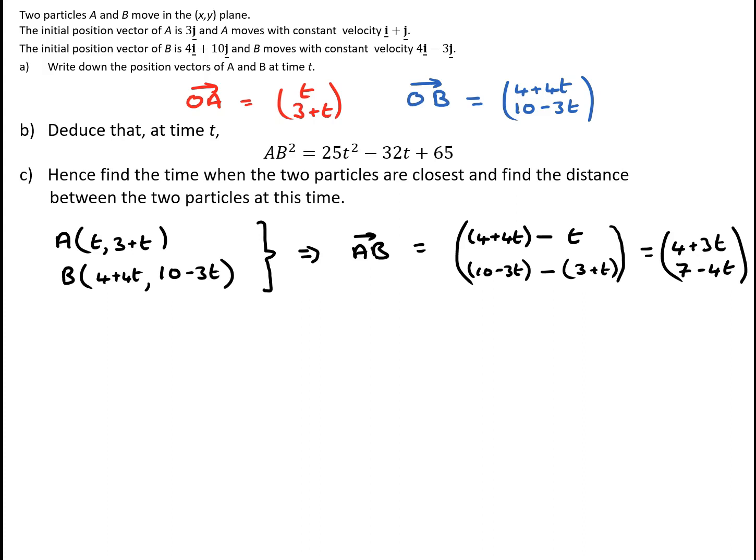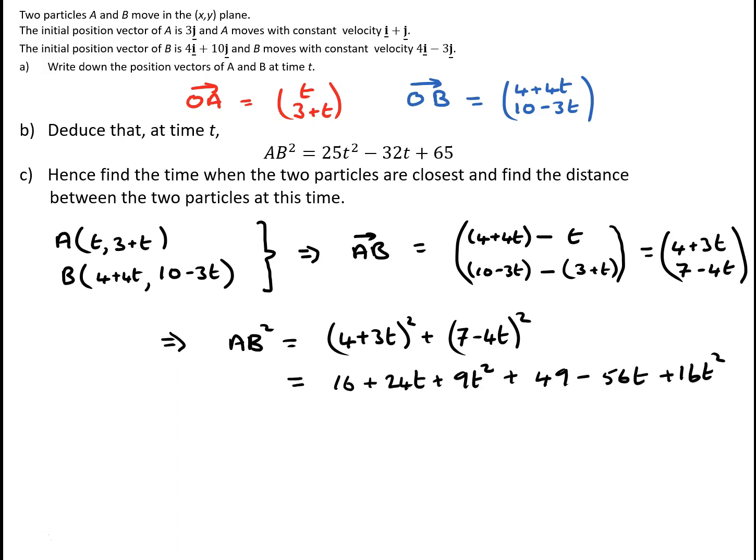Using Pythagoras' theorem, AB squared equals (4 + 3t)² plus (7 − 4t)². Expanding: (4 + 3t)² = 16 + 24t + 9t², and (7 − 4t)² = 49 − 56t + 16t². Tidying that up, we get AB² = 65 − 32t + 25t².